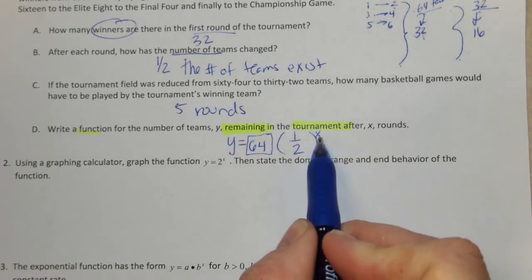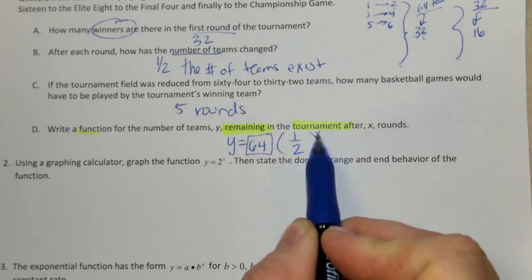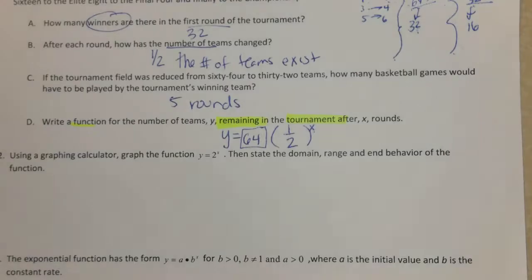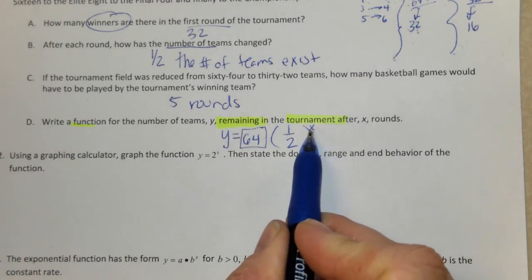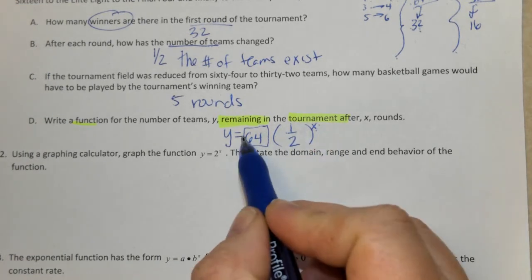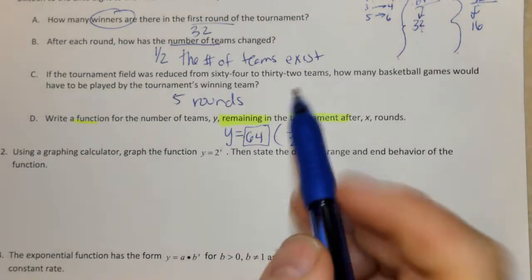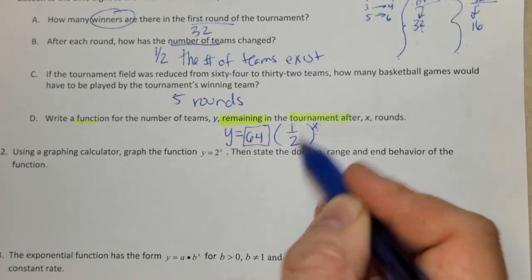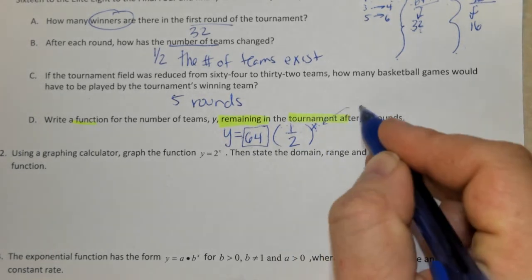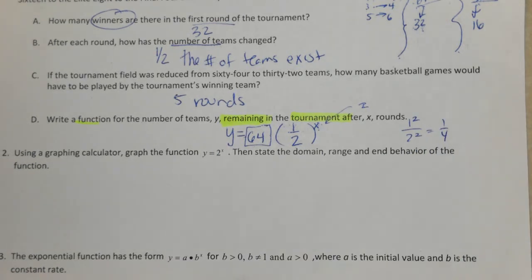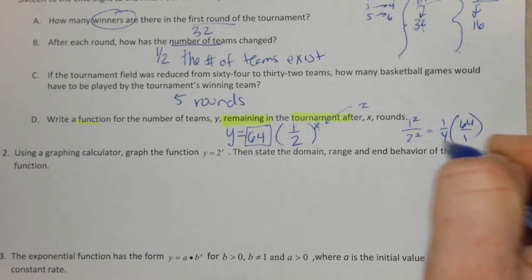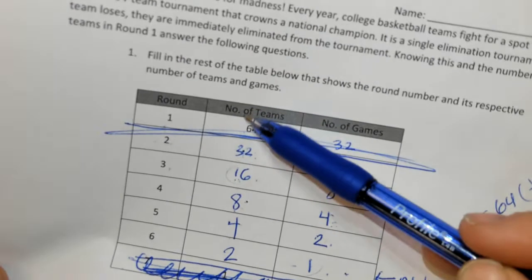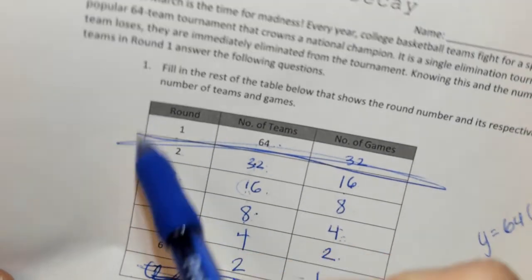Let's make sure this works. If I substitute 0 in for X — representing before we even get started — anything raised to the zero is 1, so 1 times 64 is 64. If I place a 1 in here, one half raised to the first power is one half, and half of 64 is 32. If I put a 2 in, I'd have 1 squared over 2 squared, which is one fourth. One fourth times 64 — 64 over 4 is 16. And we can see our next rounds: zero is our initial, 1 gives 32, and 2 gives 16.